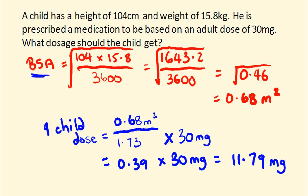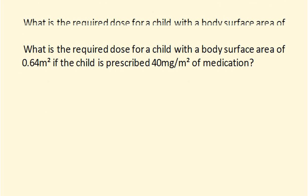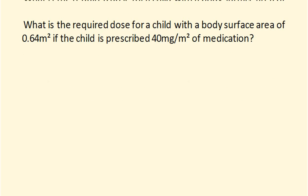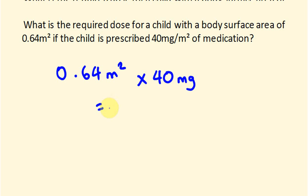It's really important that you have both of these formulas worked out. Now let's have a look at one last question: what's the required dose for a child with a body surface area of 0.64 metres squared, if the child is prescribed 40 milligrams per metre squared of medication? Since the BSA is already given, this is a straightforward calculation: 0.64 metres squared times 40 milligrams per metre squared equals 25.6 milligrams.